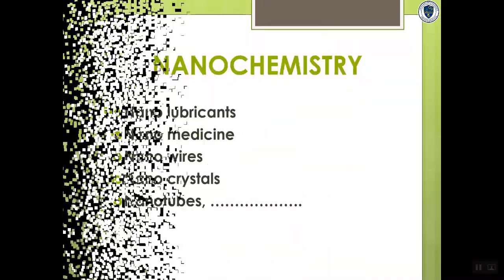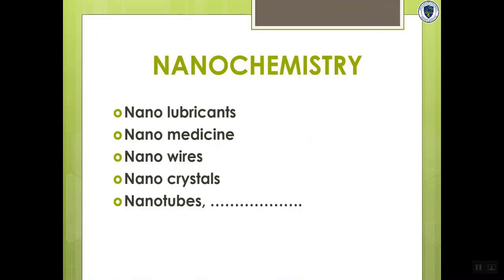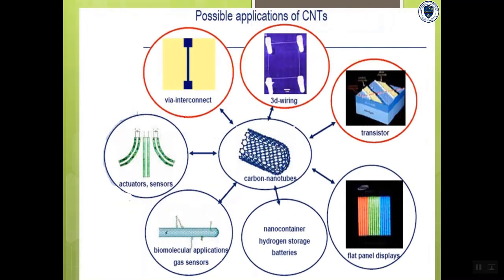Now I am going to throw light on an emerging field of nanochemistry. Chemistry is very successful in synthesizing materials of nano size, that is materials in the order 10 power minus 9 meters. Materials like nano lubricants, nano medicine, nano wires, nano crystals, nano tubes and many more are being synthesized. Among them carbon nanotubes play a major role in various applications.